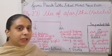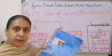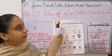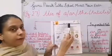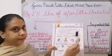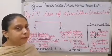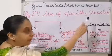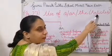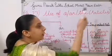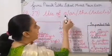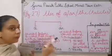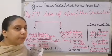Open your English grammar books, page number 27, and chapter 4: Use of A and The. Now listen to me very carefully. Use of A and The. A and The are also known as articles. If somebody says use an article, that means they are asking you to use A and The. Now, where to use A and The, we will be studying one by one.